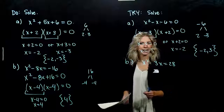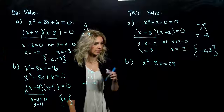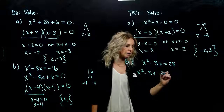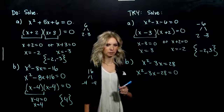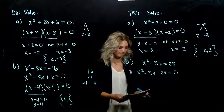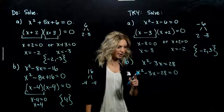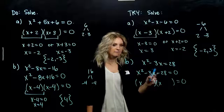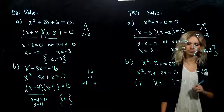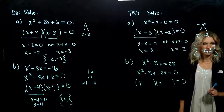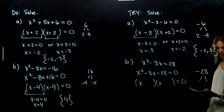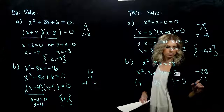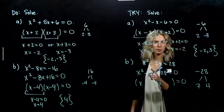For Part B, what has to happen first? We need everything on one side, so we need to move 28 over. We get x squared minus 3x minus 28 equals 0. Now we want to factor. It's not a perfect square trinomial. I've got a 1 out on the front, so it's an x and an x. I've got negative-negative, so I need a combination of negative and positive. I need factors that multiply to negative 28 and add to negative 3 — so 7 and 4 together.